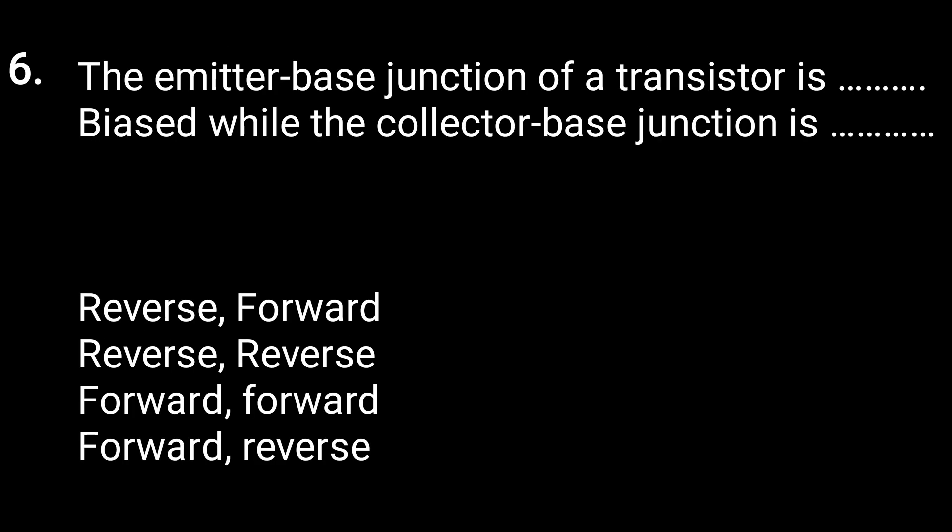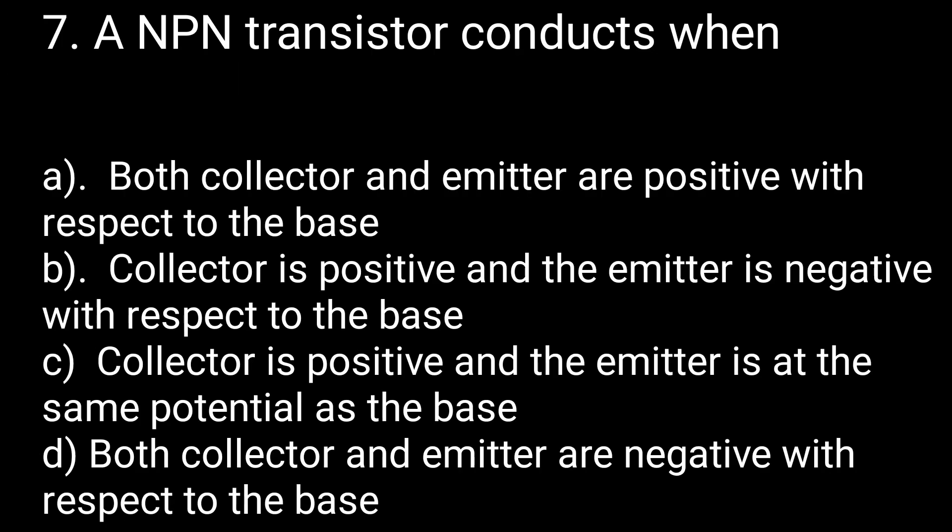Next question: the emitter-base junction of a transistor is biased while the collector-base junction is what? When the emitter-base junction is in forward bias, the collector-base junction is in reverse bias. One is forward, the other is reverse — they cannot both be forward or both be reverse.